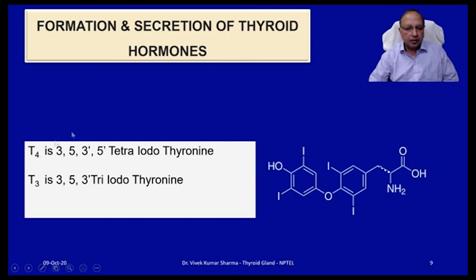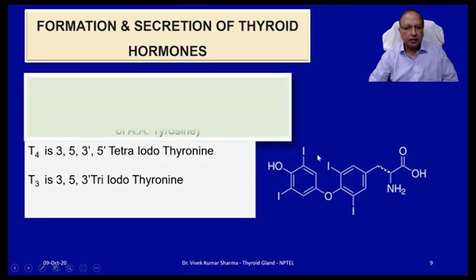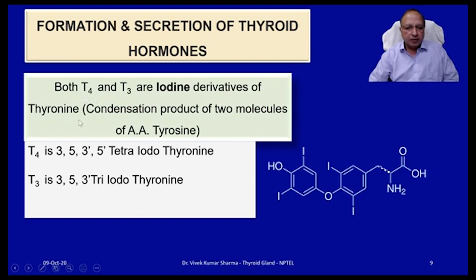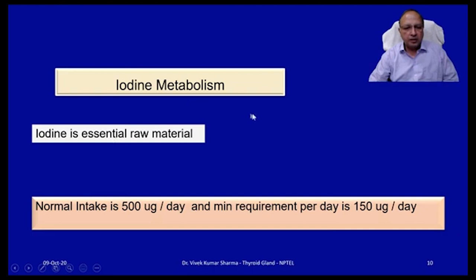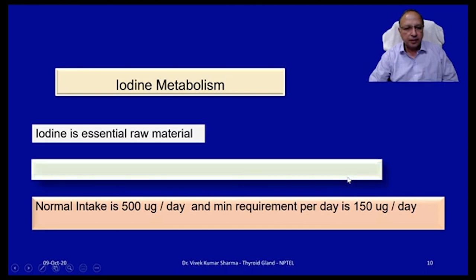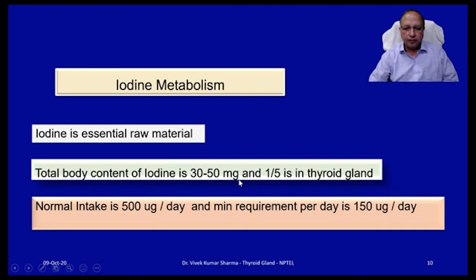Formation and secretion of thyroid hormones. T4 is 3,5,3',5'-tetraiodothyronine. Both T3 and T4 are iodine derivatives of tyrosine and are the condensation product of two molecules of the amino acid tyrosine. They are synthesized and stored as part of the thyroglobulin molecule. Iodine metabolism is crucial — normal intake is roughly 500 micrograms per day, minimum requirement is 150 micrograms per day, and total body iodine content is 30–50 milligrams, of which nearly 20% is located within the thyroid gland.